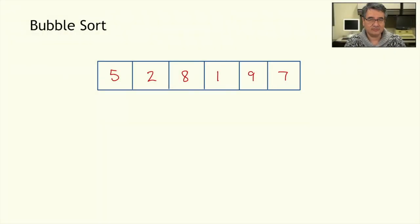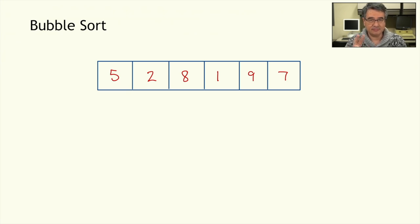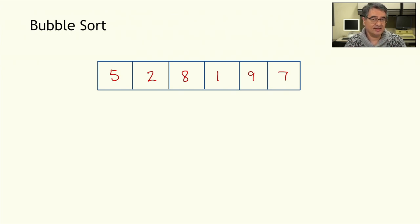We've got an array of numbers — 5, 2, 8, 1, 9, 7 — and we want to put these in order from least to greatest. Bubble sort works by comparing successive pairs of values in the array from left to right. If they're in the correct order, leave them; if they're not in the correct order, swap their positions. We're going to make multiple passes through the array, and at the end of the algorithm the array will be sorted.